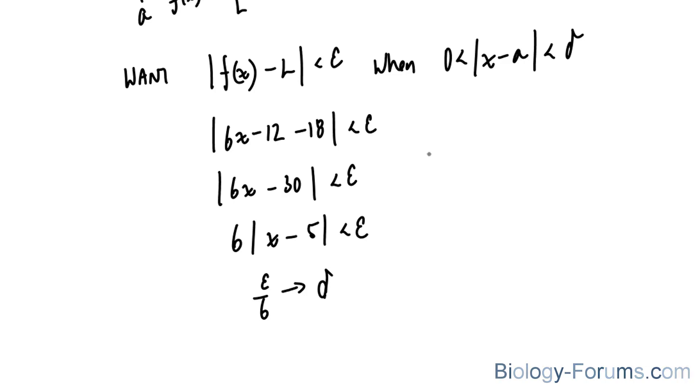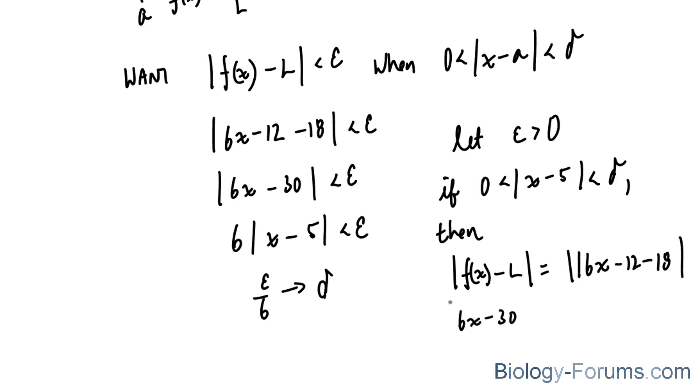Next, we must let epsilon be greater than 0. And if 0 is less than the absolute value of x minus 5 and less than delta, then the absolute value of f at x minus L is equal to the absolute value of 6x minus 12 minus 18. This leads us to the absolute value of 6x minus 30, and subsequently, 6 times the absolute value of x minus 5.